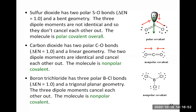BCl3 (boron trichloride) has three polar B–Cl bonds. Boron has an electronegativity of 2.0 and chlorine 3.0, so chlorine is more electronegative and the dipole arrows point from boron toward each chlorine, parallel to the bonds. BCl3 has a trigonal planar geometry — boron has three single bonds and no lone pairs, so the bonds are exactly 120 degrees apart in a flat structure. Because it's a symmetrical structure and all B–Cl bonds are equivalent, the three dipole moments cancel each other out, and BCl3 is non-polar overall, even though it has polar bonds.